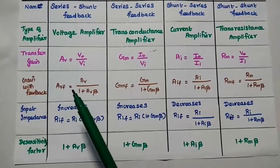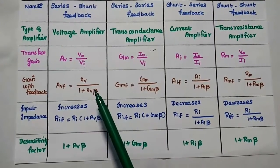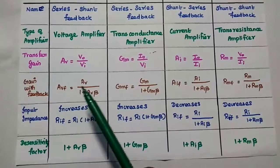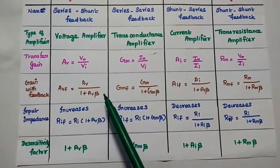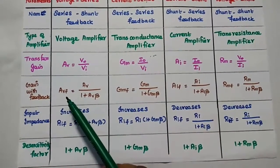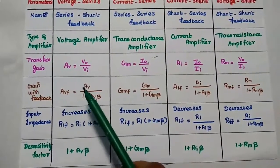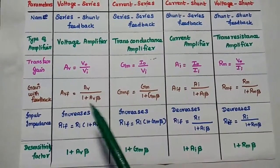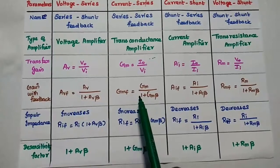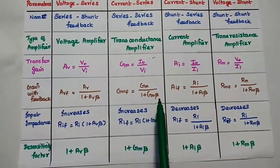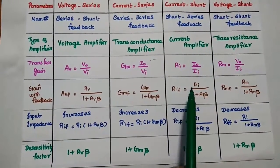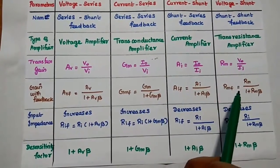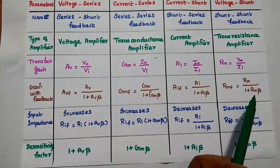Gain with feedback for each type is given here. For series-shunt feedback, AvF = Av / (1 + Av·β). Similarly, GmF = Gm / (1 + Gm·β) for series-series. Aif = Ai / (1 + Ai·β) for shunt-series. RmF = Rm / (1 + Rm·β) for shunt-shunt.